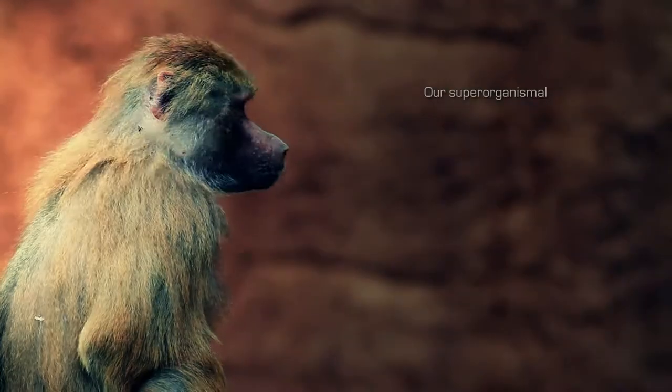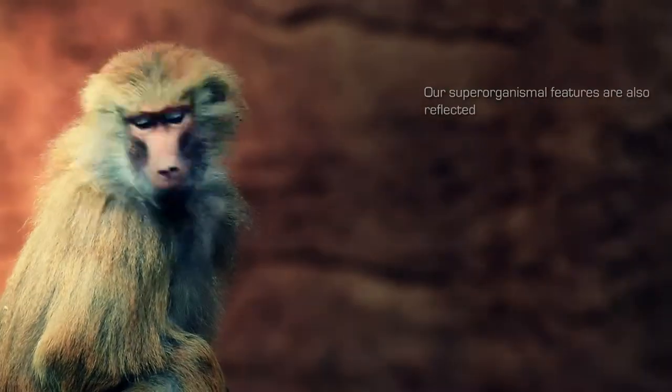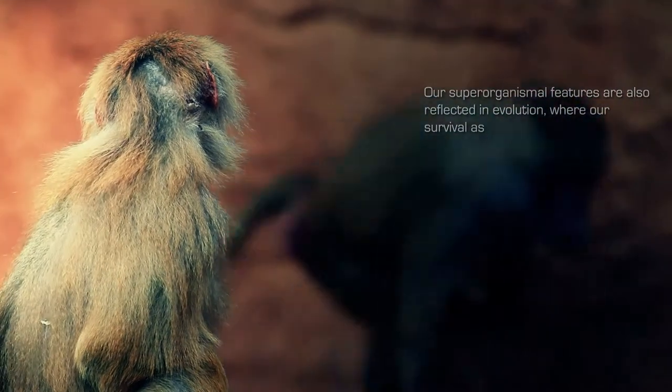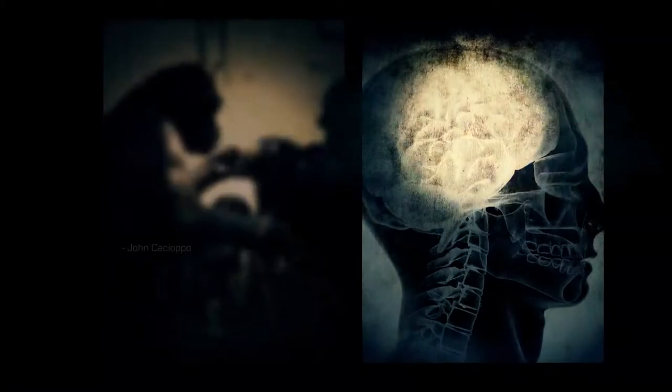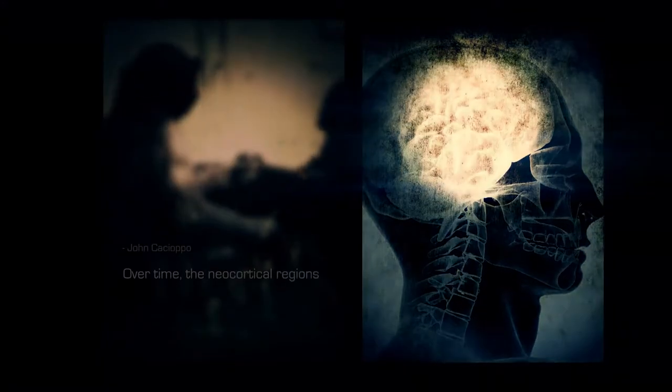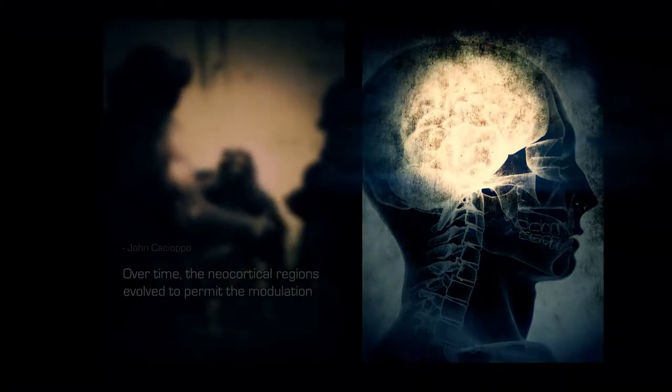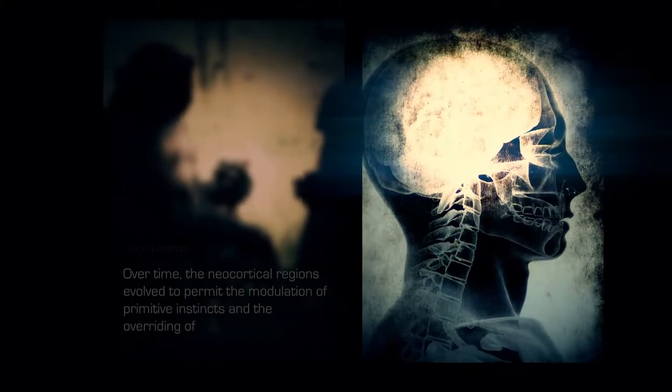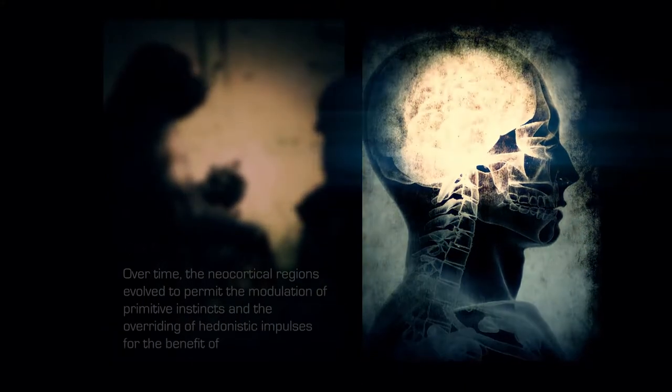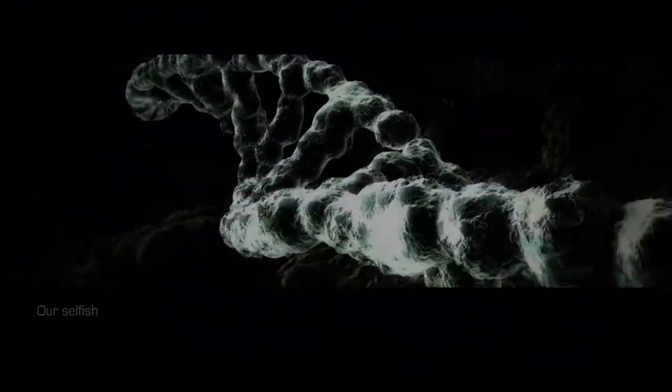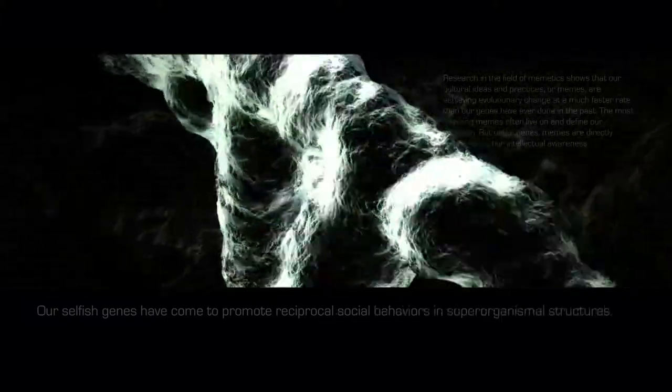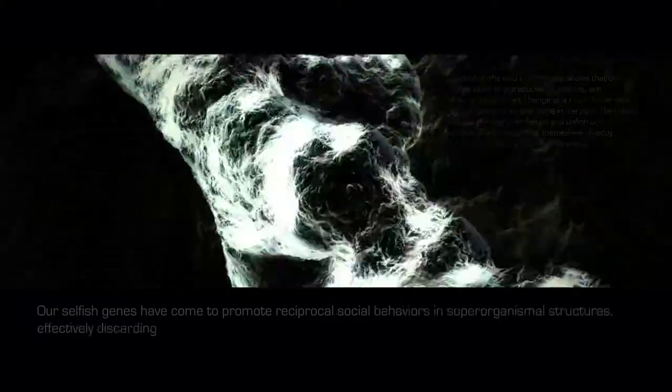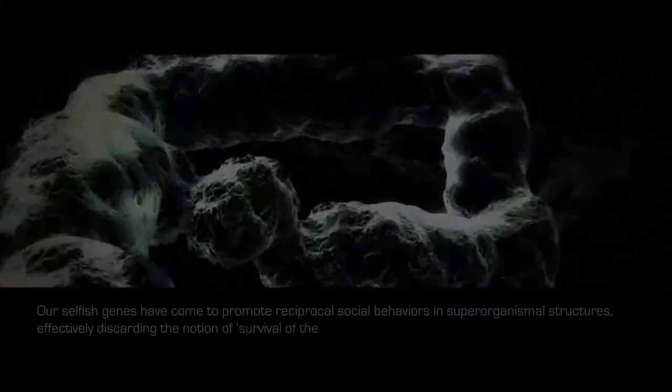Our superorganismal features are also reflected in evolution, where our survival as primates relied on our collective abilities. Over time the neocortical regions evolved to permit the modulation of primitive instincts and the overriding of hedonistic impulses for the benefit of the group. Our selfish genes have come to promote reciprocal social behaviors in superorganismal structures, effectively discarding the notion of survival of the fittest.